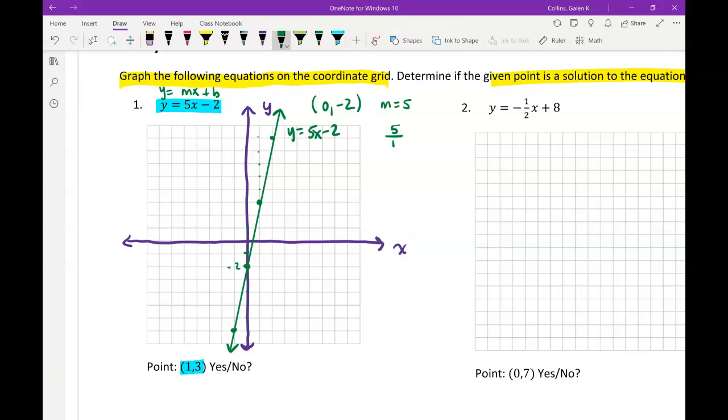The second part, we're asked to determine if this point, 1, 3, is a solution to this equation. So remember, that's an ordered pair, an x and then a y. If I go out 1 on my x-axis and up 1, 2, 3 on my y-axis, and I plot that point, I can see that, yes, it lies on the line. Therefore, it is a solution.